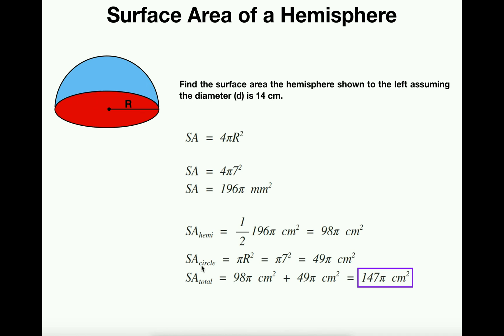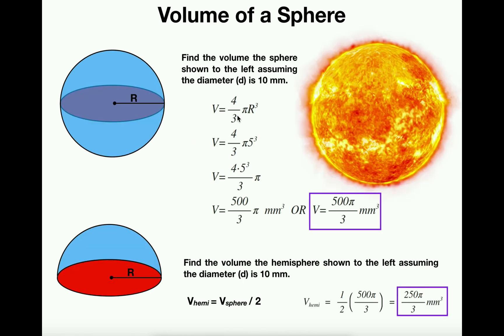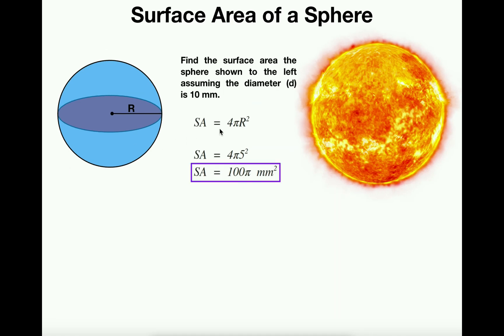Now if this part confuses you, neglect it. This is only for people that are familiar with calculus. If you're familiar with calculus and you're wanting to learn the way to get the surface area formula from the volume formula for a sphere, notice that if you take the volume formula and differentiate it with respect to r, in other words take the derivative, the derivative of this is actually the surface area formula.